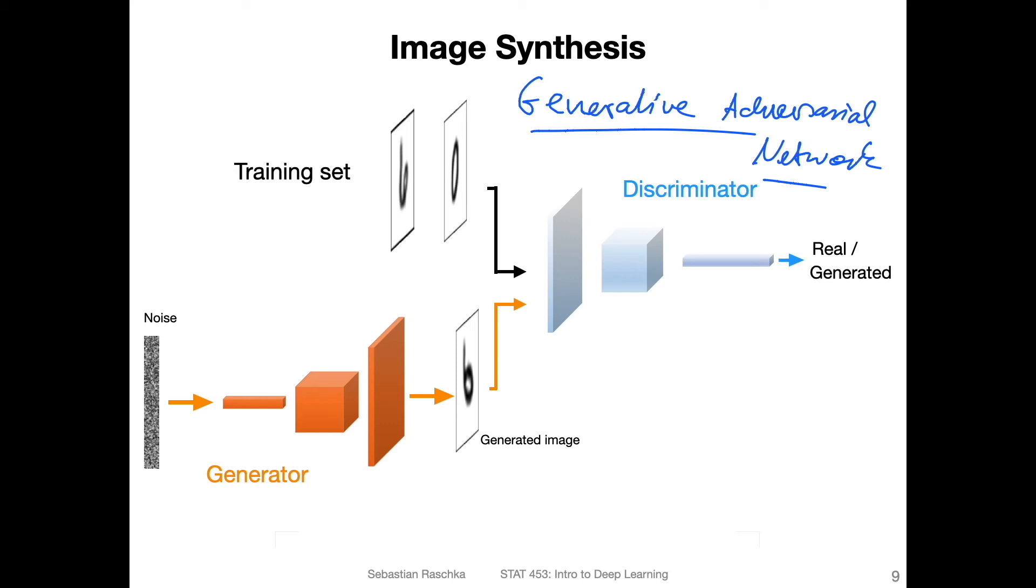How that works is you have a generator and a discriminator, and the generator takes in some noise. Usually you sample from a random distribution, from a normal distribution, a random vector, and then you put it through a convolutional network that constructs an image from this noise vector. In that sense, it's more like an inverted convolutional network. It will output a generated image.